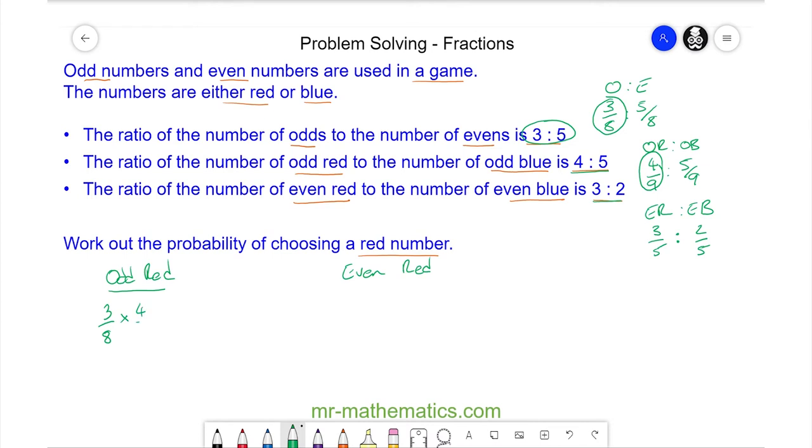So we're going to multiply 3/8 by 4/9. We can simplify this product using cross-simplification where we divide by 3 and divide here by 4. So this product becomes 1/2 multiplied by 1/3 which is 1/6. This is the probability of choosing an odd red.